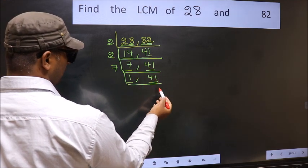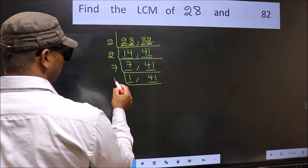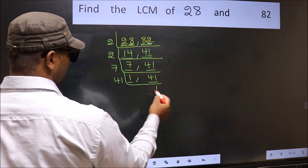So focus on the other number 41. 41 is a prime number. So 41 once is 41.